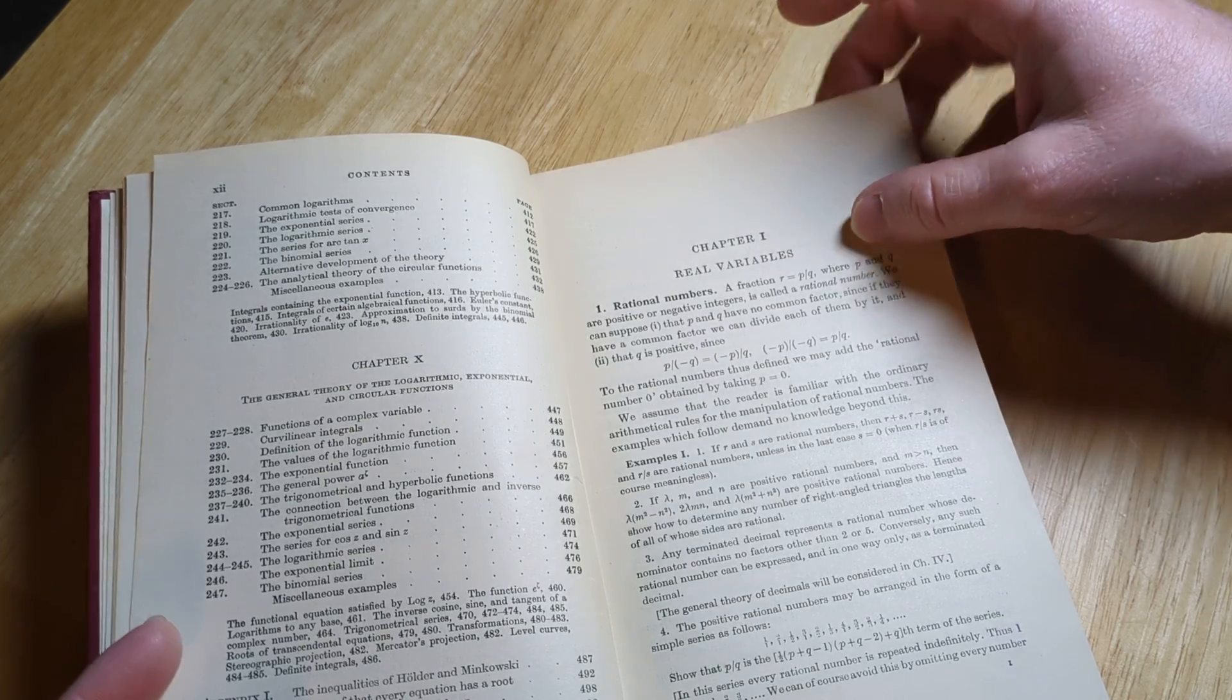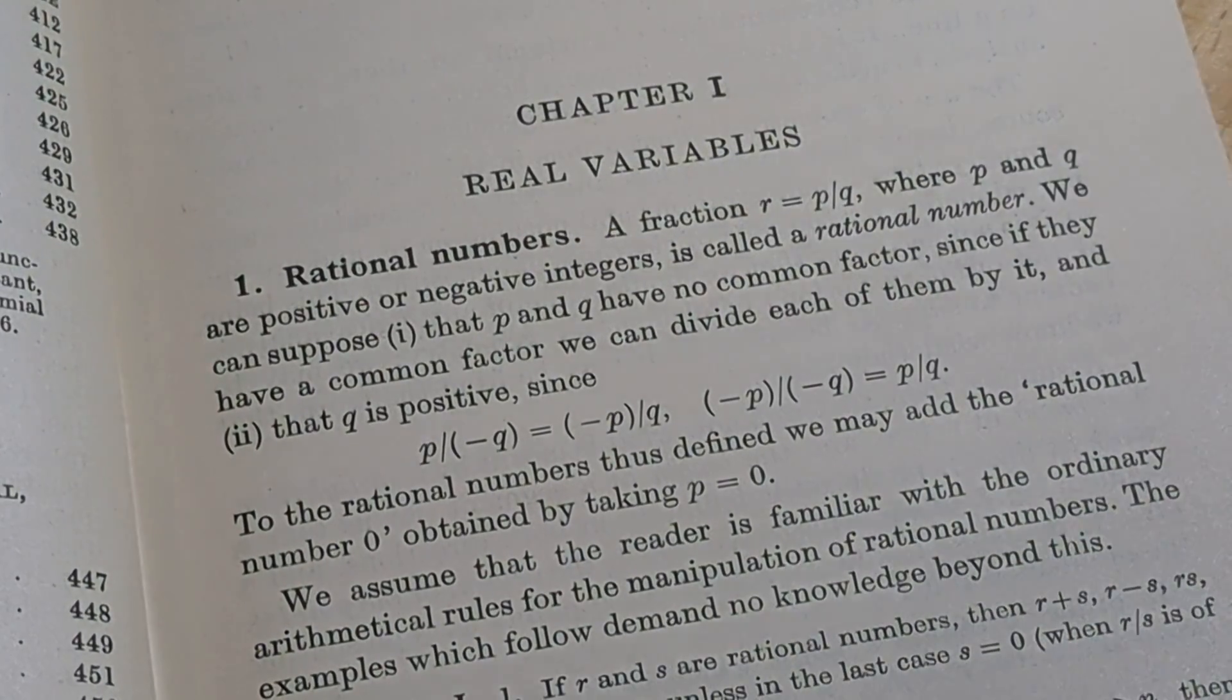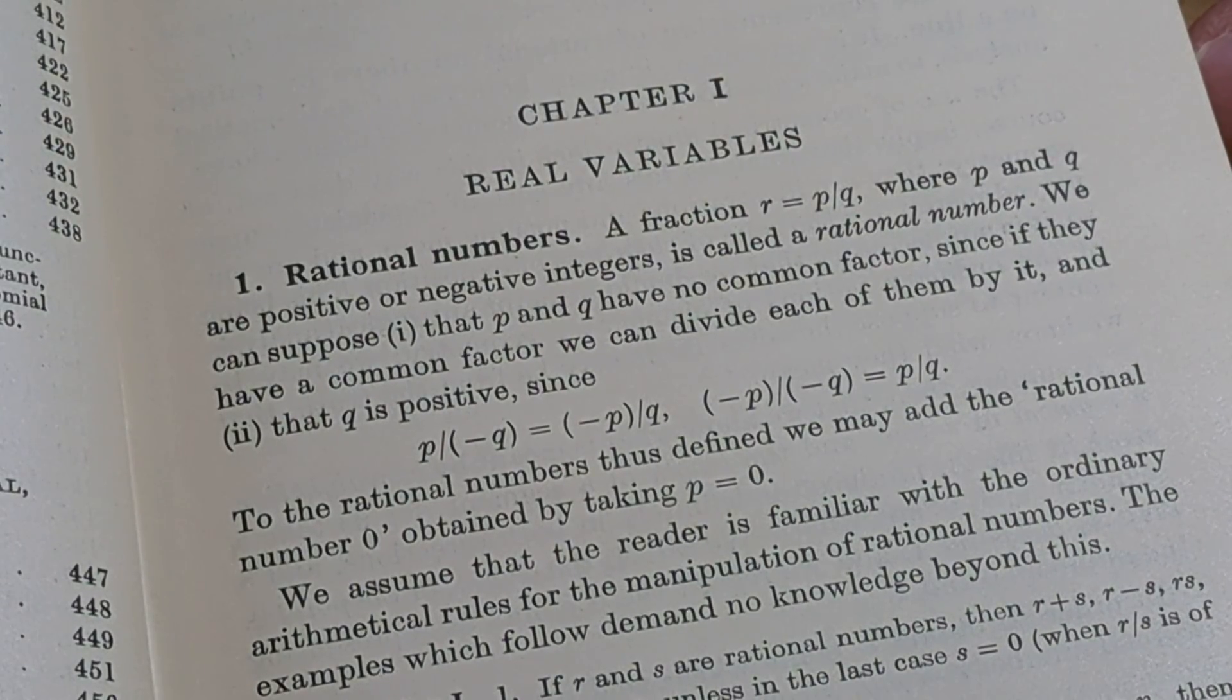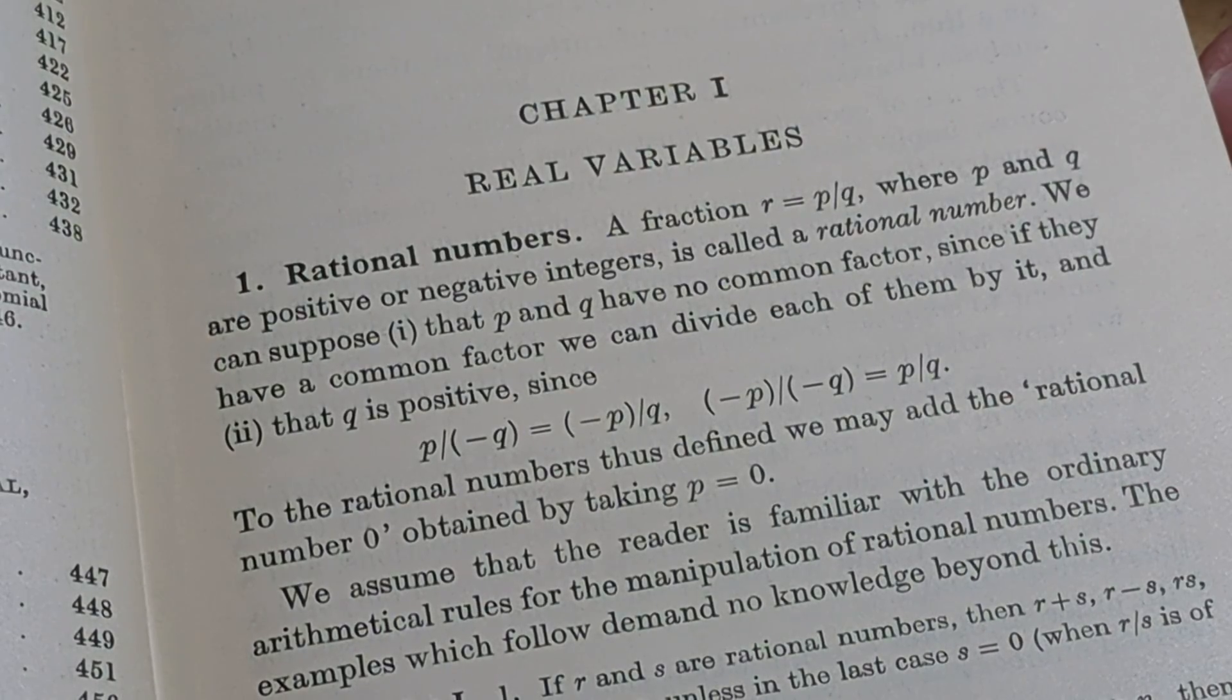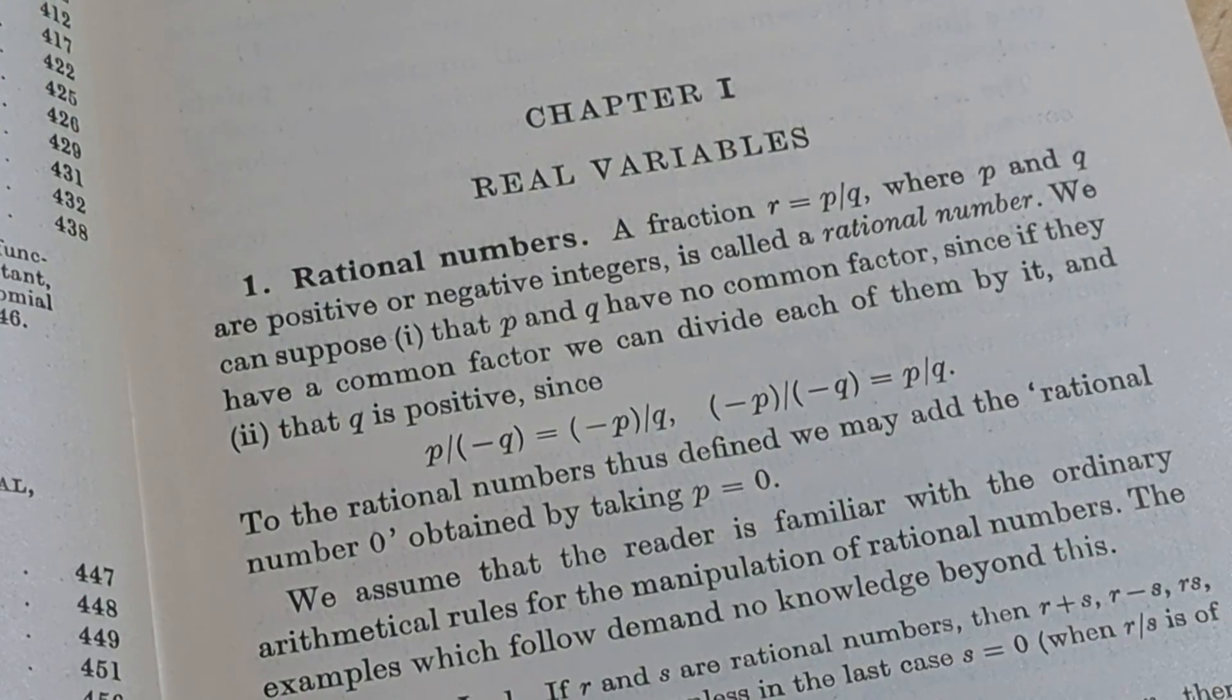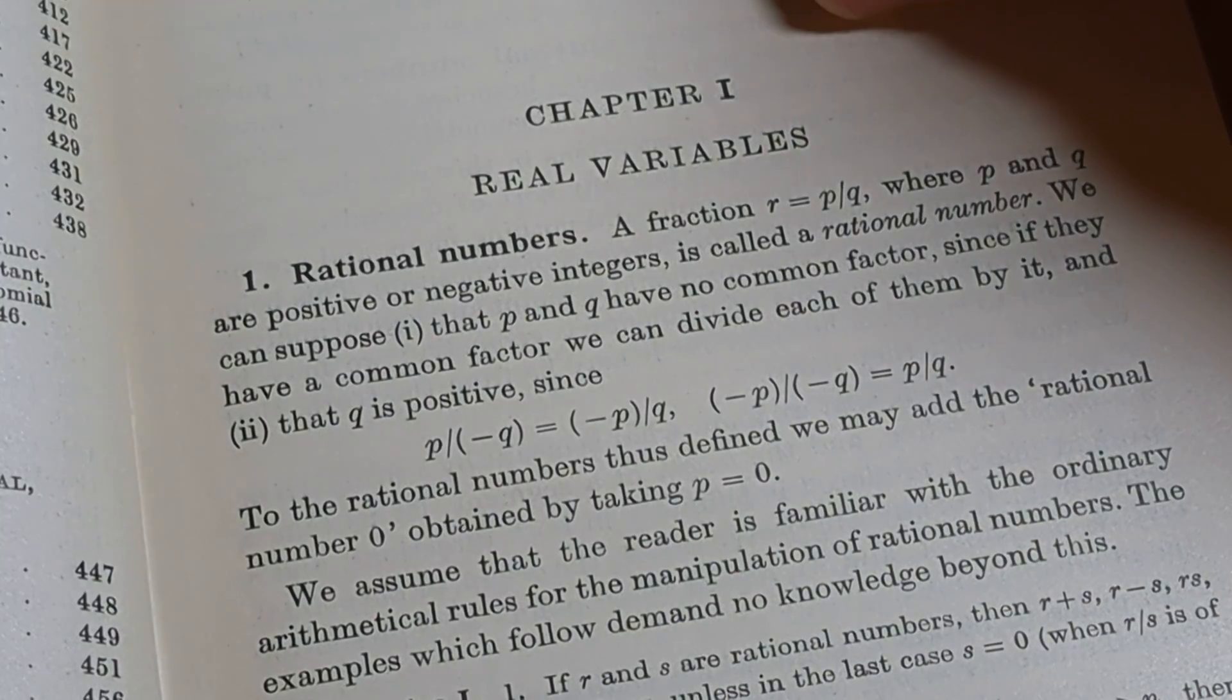So it's rational numbers, right here. It's right at the very beginning of the book. It says a fraction R equals P over Q, where P and Q are positive or negative integers, is called a rational number. We can suppose, one, that P and Q have no common factors, since if they have a common factor, we can divide both of them by it. And two, that Q is positive, since if it was negative, you would just get that. To the rational numbers thus defined, we may add the rational number zero by taking P equals zero.